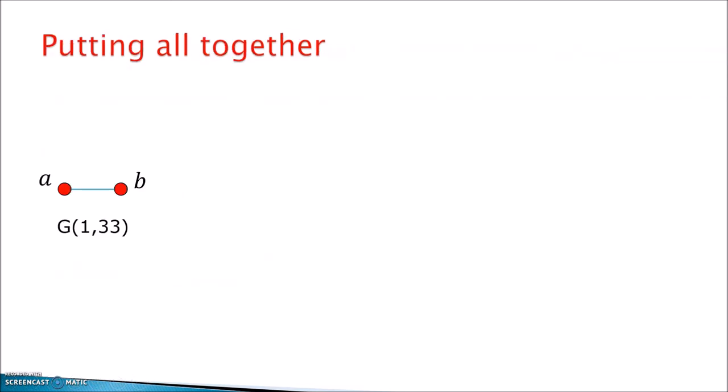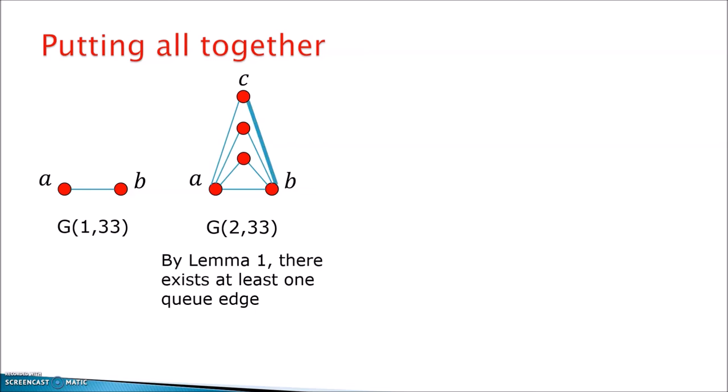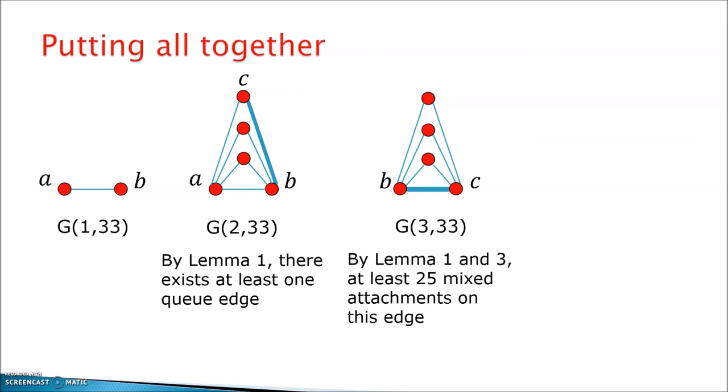So putting all together, we start from G(1,33), which is an edge, then we do G(2,33) by 33 attachments. Here it's easy to see that at least one edge will be a queue edge, otherwise we would have 33 stackings and we know that we have at most two by Lemma 1. So we take this queue edge, we focus on that, we forget the rest, and we look at these in the G(3,33). Here we have at most two stackings again. Now the condition of Lemma 3 applies to say that we have at most six queueings.